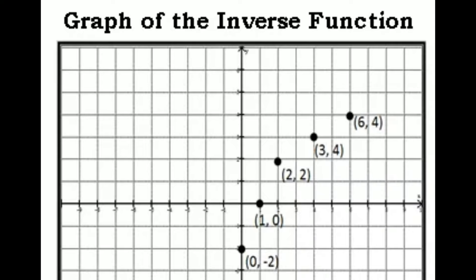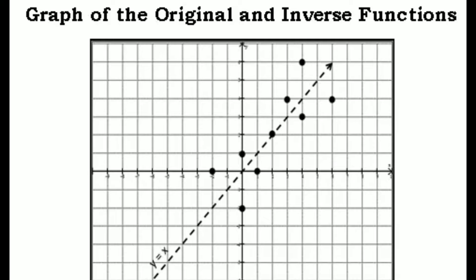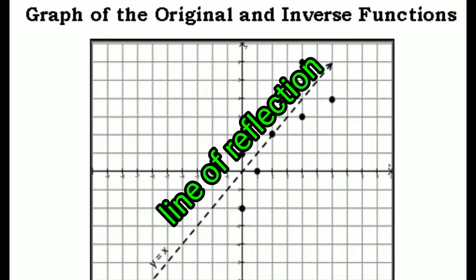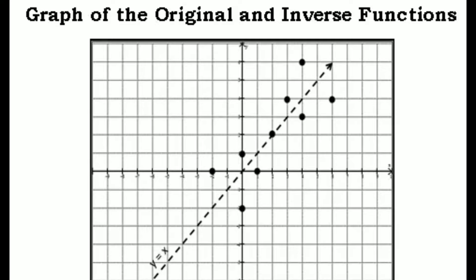Now, where is the line of reflection, or y equals x? Here is the graph of the original function and its inverse. You can see a broken line labeled y equals x — that is the line of reflection or the axis of symmetry. If you imagine this paper as a graphing paper and fold it along that broken line y equals x, the points and their inverses will coincide. For example, (4,6) will match with (6,4), and (0,-2) will match with (-2,0).